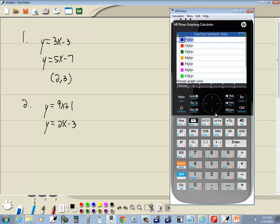Go back to F1. And I'm going to put in my 9x plus 1. Enter. And the next one I'll put 2x minus 3. And press enter. Okay. Now let's plot.